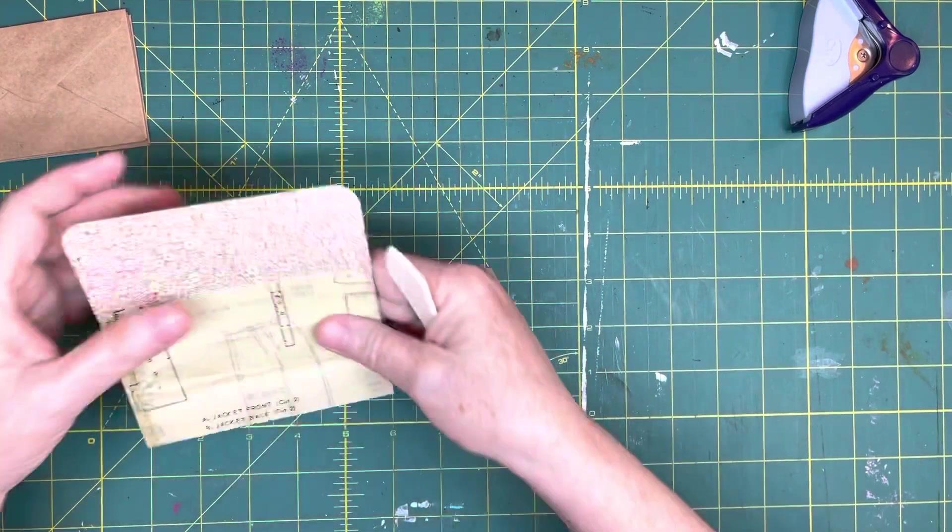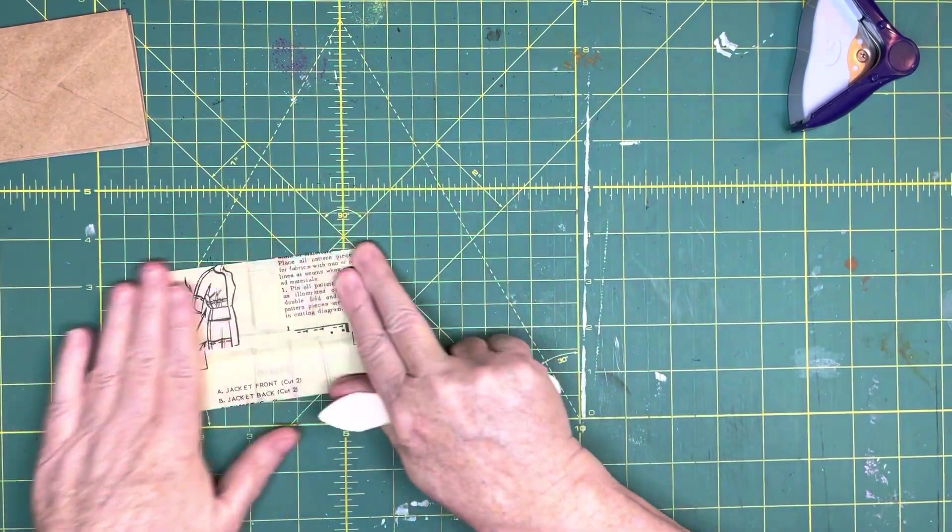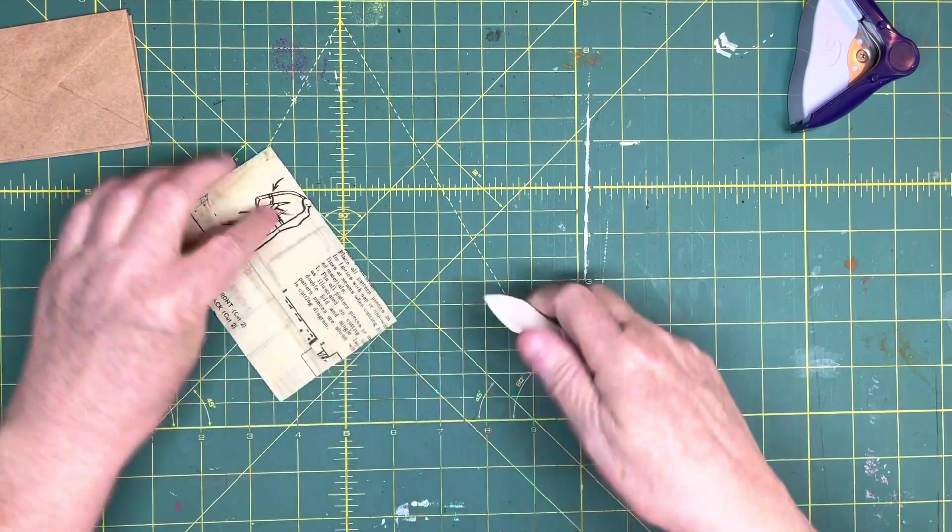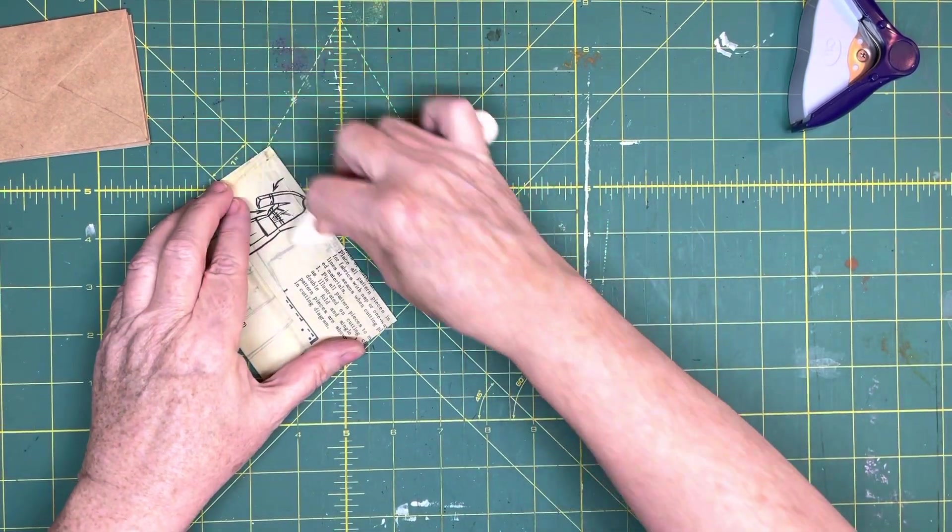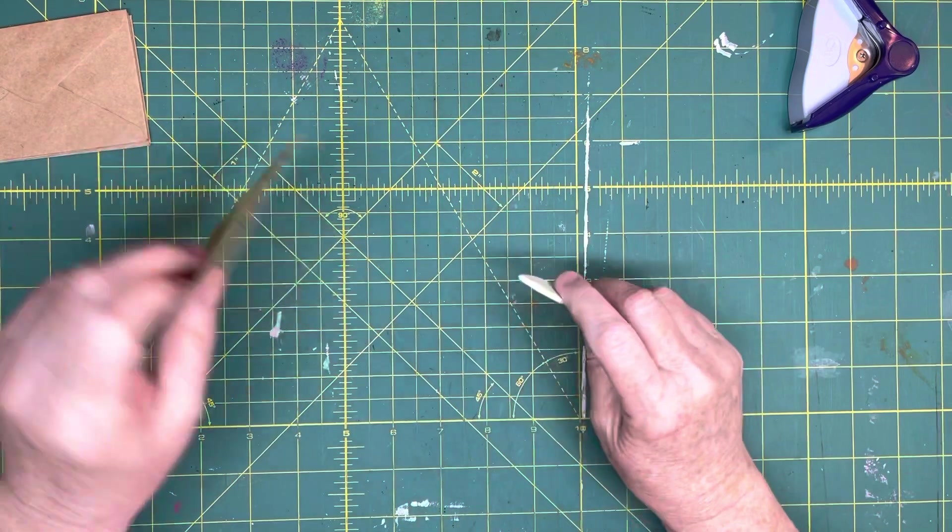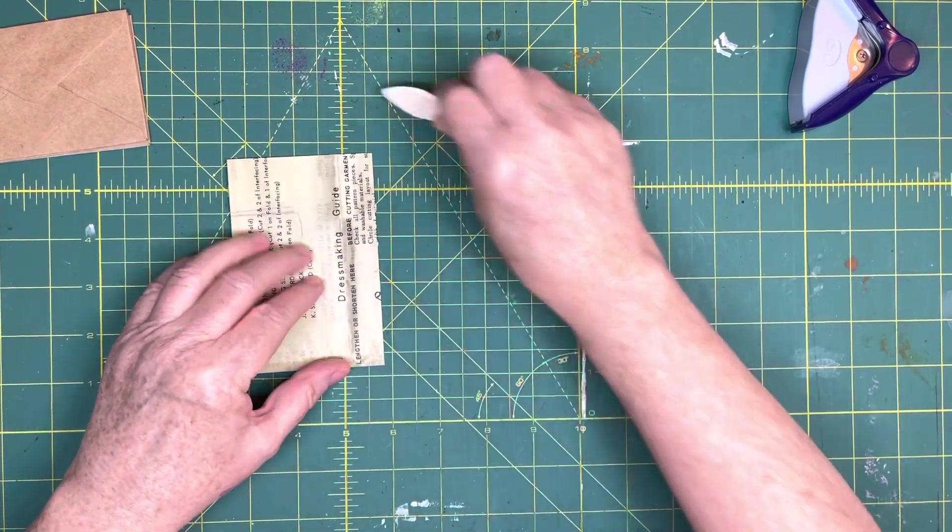You're going to want whichever piece you want folded up in the front to face the left side of your scoreboard. So I'm going to crease these real quick and because of the way I creased it, guess what, that's right side up too. So you can use directional paper with this, you just have to pay attention to how you're laying it down.